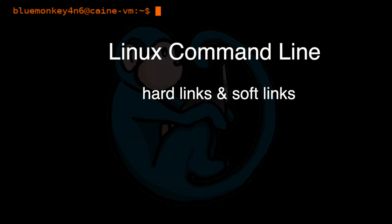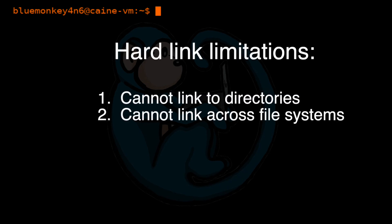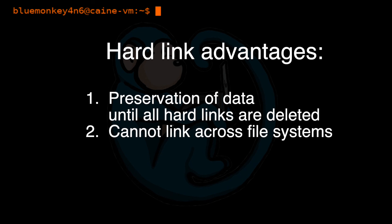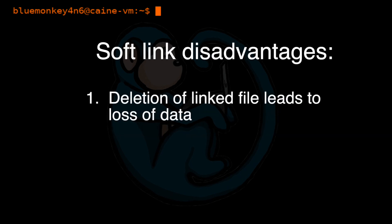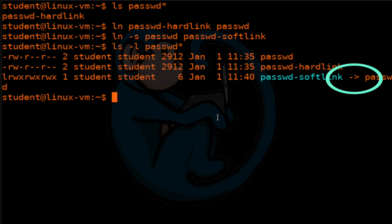That brings us to the end of this video where we looked at what hard links and soft links are and created both types with the ln command. Hard links have limitations — they cannot point to a directory and cannot point to files in another file system. But because they point to the file content, when you delete one hard link, the content is still there. Soft links point to file names, so when you delete the original, the soft link no longer points to anything valid. The size of a hard link reflects the content size, while the size of a soft link reflects the file name length. With ls -l, you can see where a soft link points, but with a hard link you can only tell by the link count number in that column.